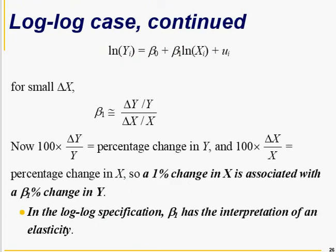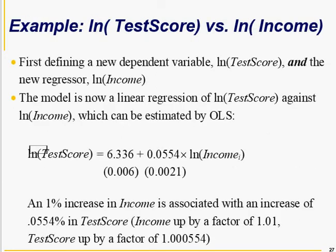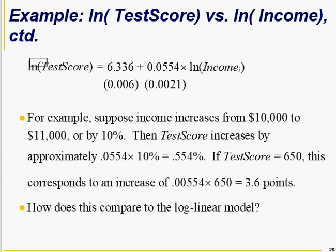A one percent change in X is associated with a beta 1 percent change in Y, and beta 1 is elasticity. Here, 0.00554: one percent change in log of income leads to 0.00554 change in test score. That is, one percent increase in income is associated with an increase of 0.0554 percent or 0.000554 change in Y.